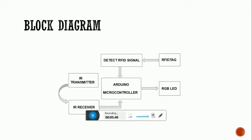In the block diagram, the RFID tag signal is read by the RFID reader and fed into the Arduino microcontroller. Additionally, the IR transmitter output goes into the IR receiver, which is also fed to the Arduino microcontroller. So two inputs — the RFID signal and the IR receiver signal — are processed by the Arduino, which then controls the RGB LED traffic signals accordingly.